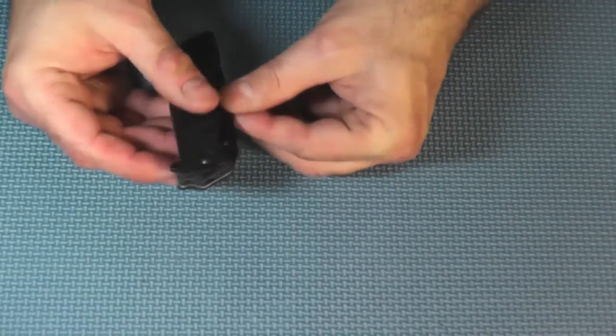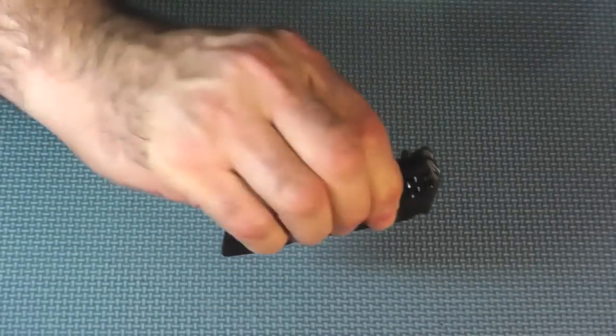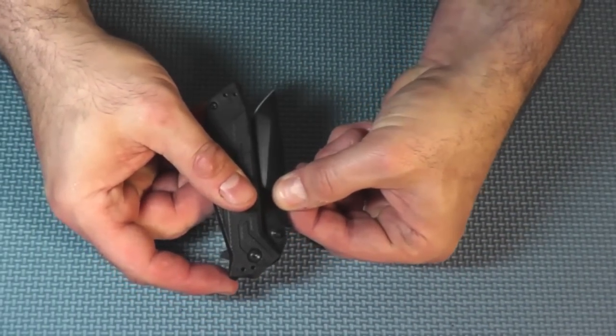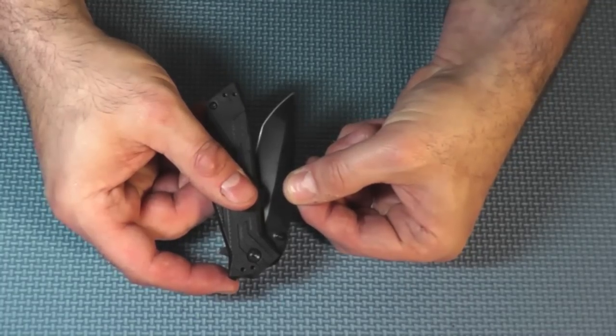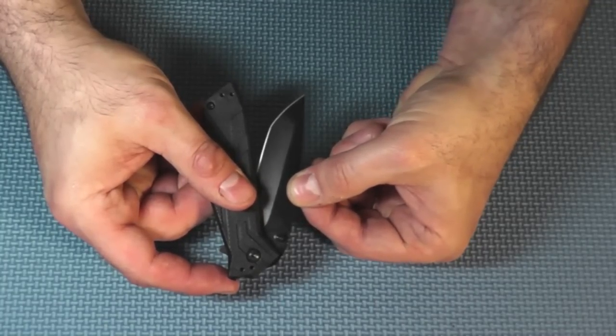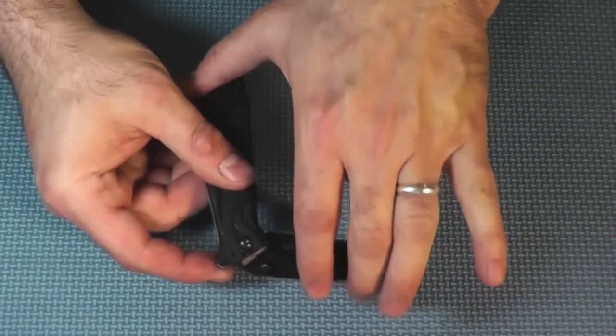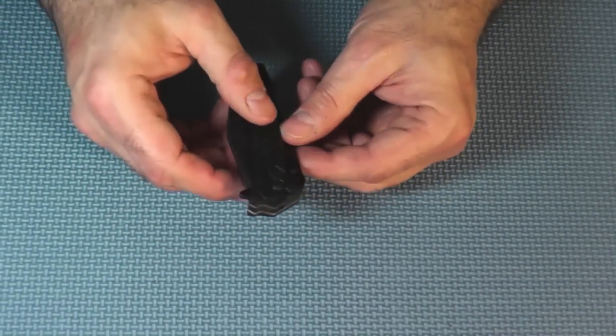Next thing is blade retention. And, it's not flying out by itself. And, here's how far you've got to pull this out before it starts to deploy. Right about there. I almost cut my hand there. Pretty good blade retention. Shouldn't be any problems opening up in your pocket.